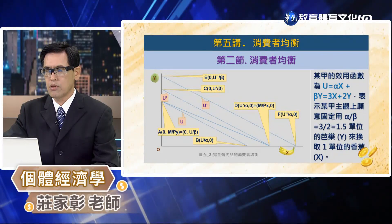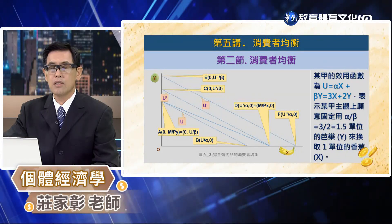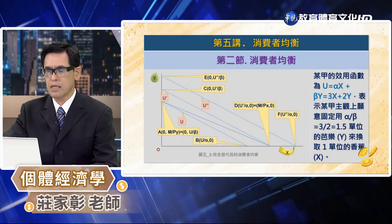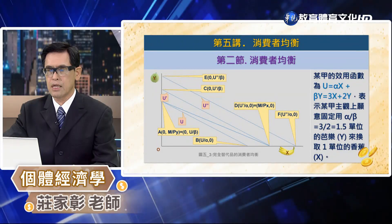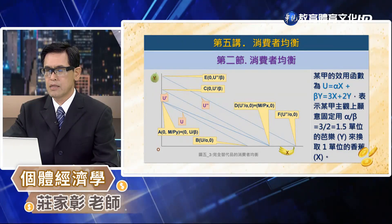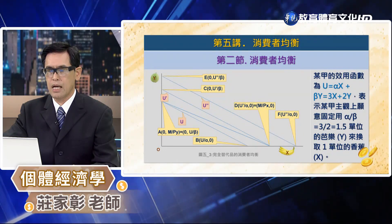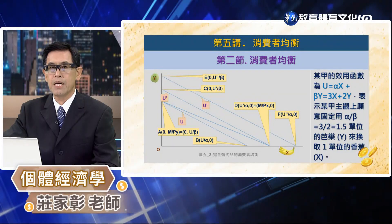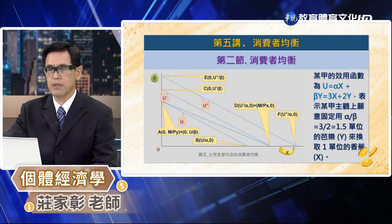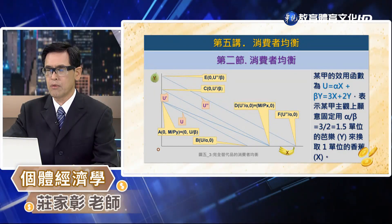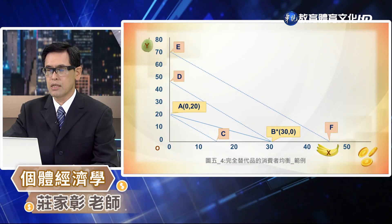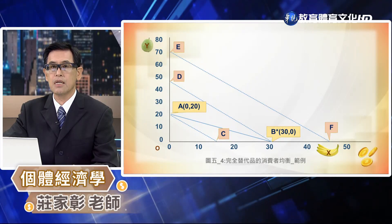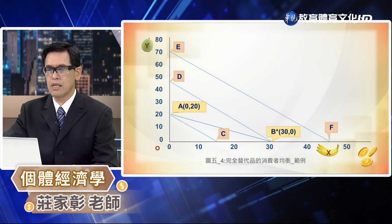模甲主觀上愿意固定用 α/β = 3/2 = 1.5 單位的巴勒來換取一單位的香蕉。如果市場上香蕉和巴勒的價格分別是2塊錢跟3塊錢，則市場上為了獲得一單位的香蕉必須付出 0.67 單位的巴勒。因此模甲主觀上為了獲得一單位的香蕉愿意放弃的巴勒（1.5單位）比市場上放弃的巴勒（0.67單位）還要多，即 β/α = 1.5 超過 Px/Py = 0.67，這個時候模甲將會把所有的所得用來購買香蕉。